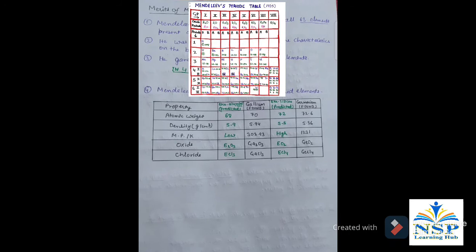Mendeleev also gave some prediction for undiscovered elements. For example, he gives some properties for eka-aluminum and eka-silicon. We know that gallium is found at the place of eka-aluminum. Similarly, the germanium is found at the place of eka-silicon.